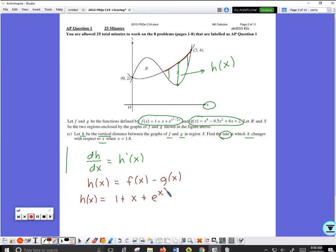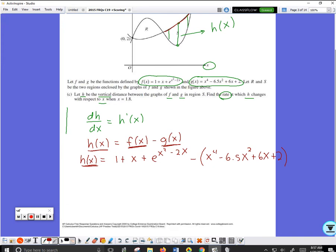So let's see, that means h of x would equal f which is 1 plus x plus e raised to the x squared minus 2x, and then all of that is subtracting the parenthesis x to the 4th minus 6.5 x squared plus 6x plus 2. This problem was originally in the calculator section so they did allow a calculator to be used. So literally again on your calculator you can just have f in your calculator, g in your calculator, you put into your calculator h which is just f minus g, and then use math 8 to find the derivative.